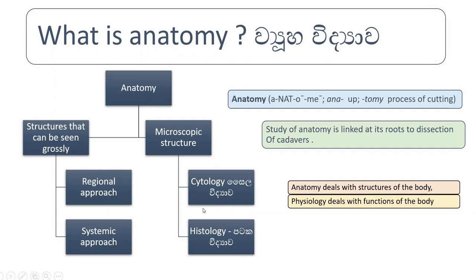How to study gross anatomy? You can go with a regional approach — that means you can talk about the abdominal cavity, thoracic cavity, upper limbs, lower limbs, and so on. Then you have a systematic approach, like cardiovascular, respiratory, lymphatic system, endocrine system — likewise you can study.